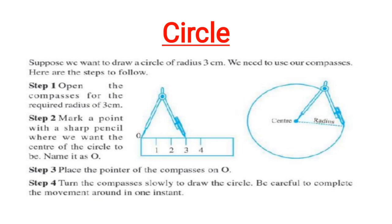Step 1: Open the compass for the required radius of 3 cm. Step 2: Mark a point with a sharp pencil where we want the center of the circle to be and name it as O. Now place the pointer on the center and turn the compass slowly to draw the circle. We should be careful to complete the movement around in one instant. And this is how we will get the circle of radius 3 cm.